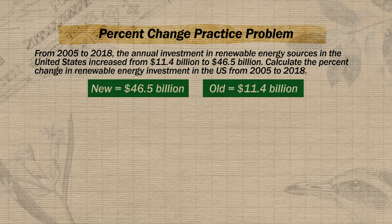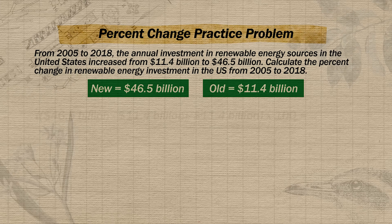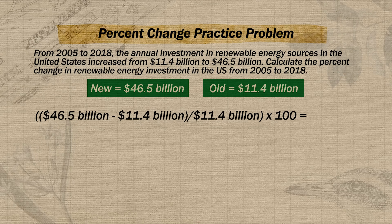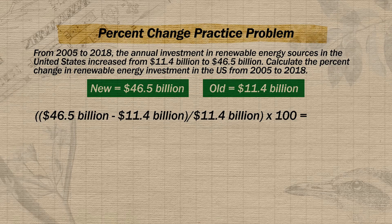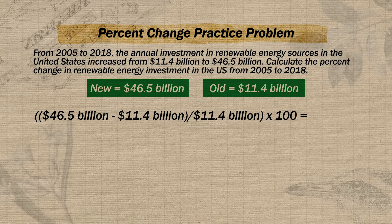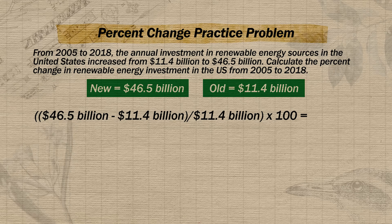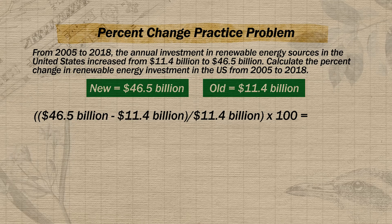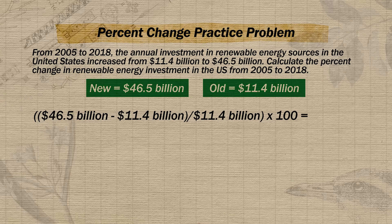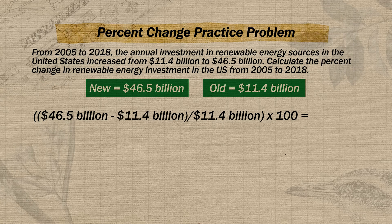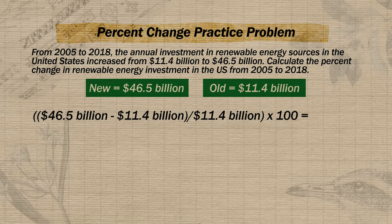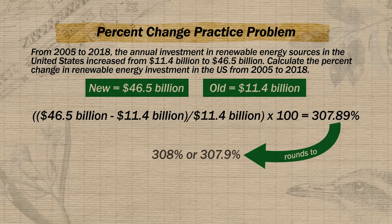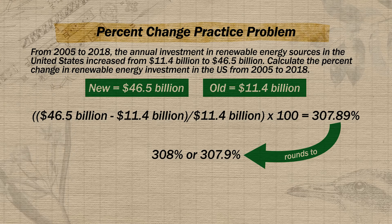Now we plug into the percent change formula: $46.5 billion minus $11.4 billion, all over $11.4 billion, times 100. As long as you clearly separate these values with parentheses, you can enter this into your calculator all at once, or go step by step. So 46.5 minus 11.4 is 35.1, divided by 11.4 is 3.0789, and multiplying by 100 gives us 307.89%. The FRQ scoring guides from 2021 accepted answers rounded to the nearest tenth of a percent or whole percent.